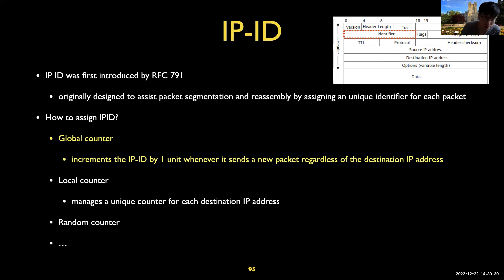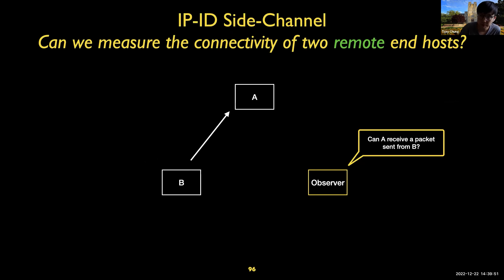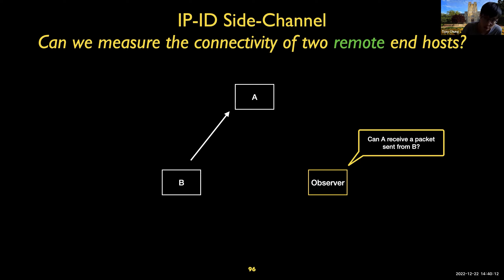One very old technique is to assign a unique IP ID by incrementing by one whenever the host sends a new packet, regardless of the destination. Using these two concepts — IP ID and TCP handshake — we can actually measure the connectivity between two remote end hosts. The research question here is: from the observer's perspective, can you determine if host B can send a packet to host A, without having any control over A and B?